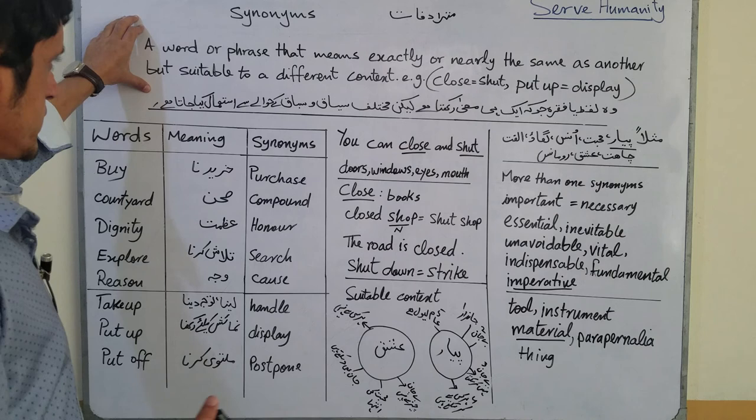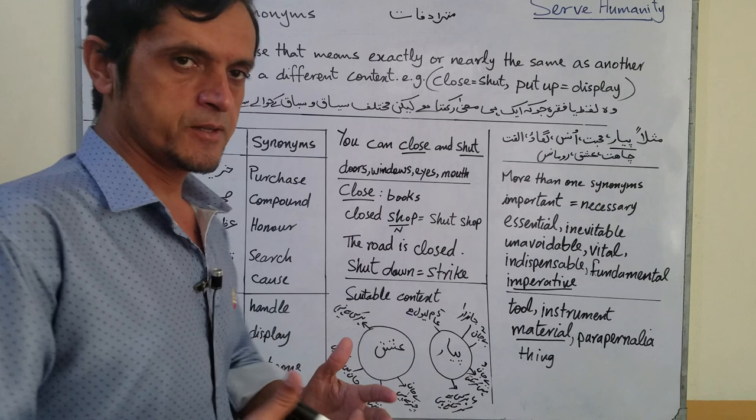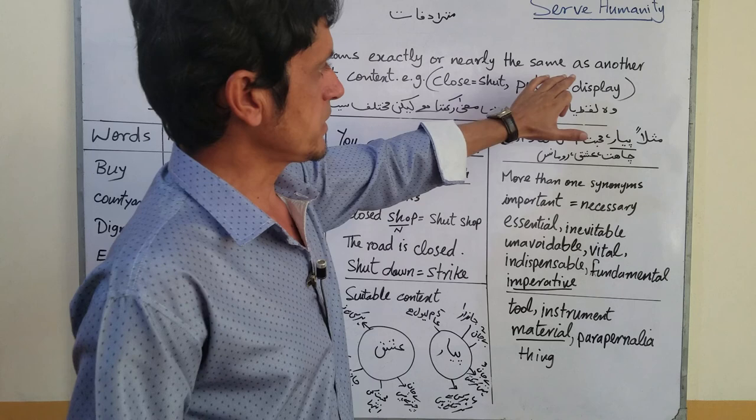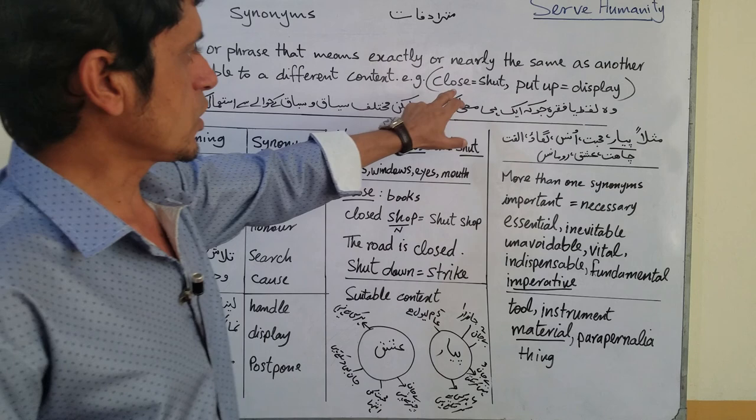But I have written this definition — a world-class definition. Even though it's a little bit lengthy, it's a very concise definition of synonym: 'A word or phrase that means exactly or nearly the same as another but suitable to a different context.' E.g. close, shut, put up, display.